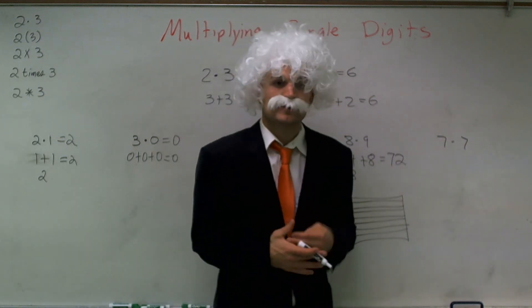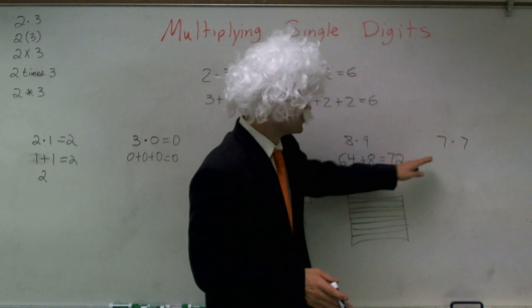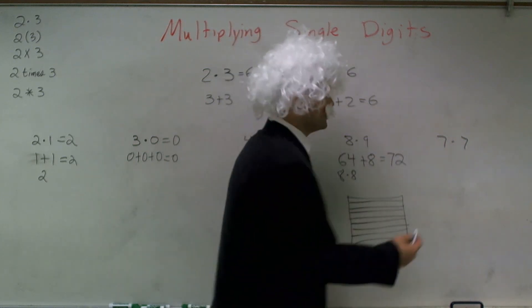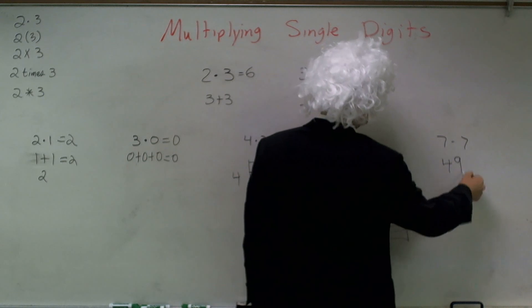Last one, I'll look at 7 times 7. Again, that's going to be 7 sets of 7. You can draw a box or you can add 7 seven times. And what you'll end up getting is 49.